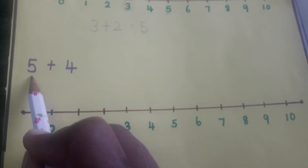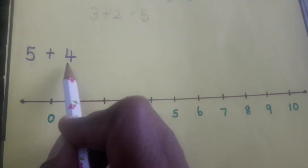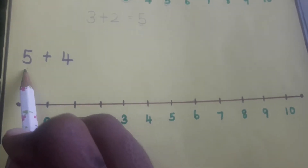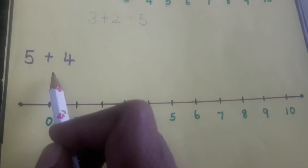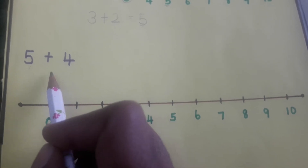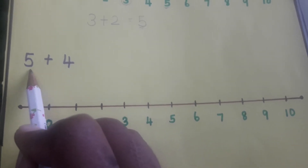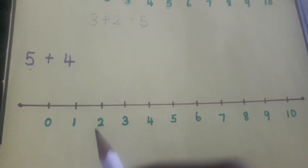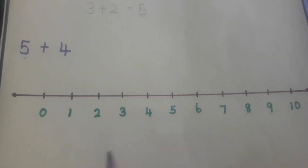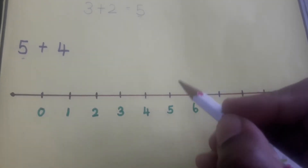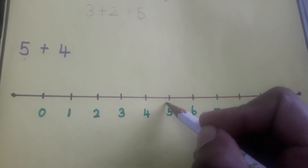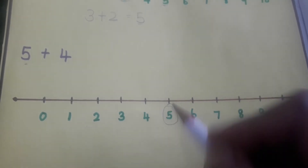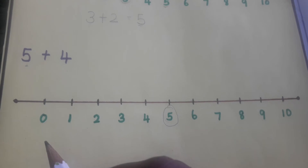Now we are going to add number 5 and 4. To add these numbers, first what do we have to do? Yes, very good — we have to circle number 5 on the number line. Where is number 5? Yes, here is number 5, so we circle it. Then what do we have to do?